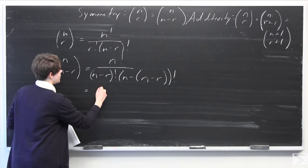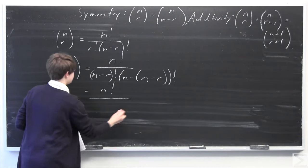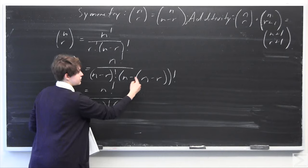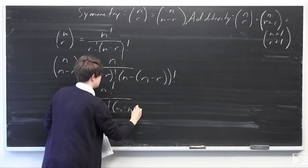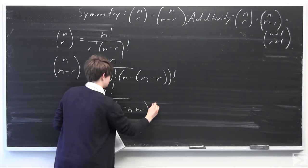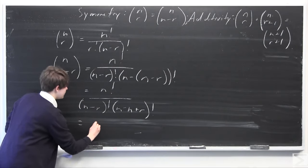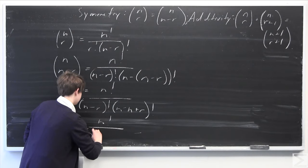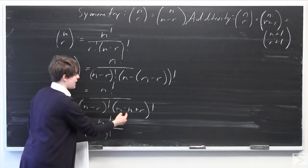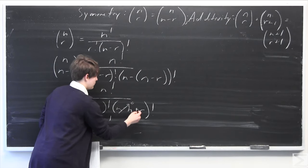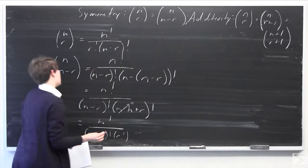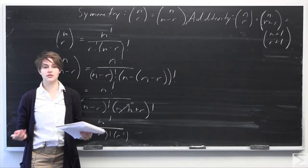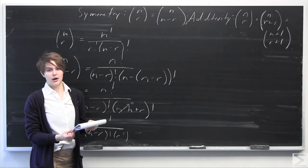Now I'm going to simplify this. We have n factorial in the numerator, which stays the same. In the denominator we leave (n minus r) factorial, and then distributing out the negative sign we get (n minus n plus r) factorial. The n minus n terms cancel, and we're left with r factorial. So n factorial over (n minus r) factorial times r factorial is exactly equal to the left-hand side. Therefore, we have proved the symmetry property of the binomial coefficient.